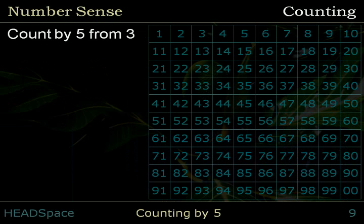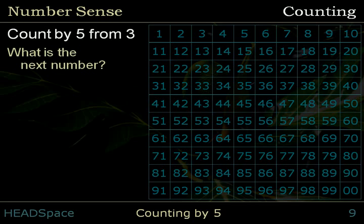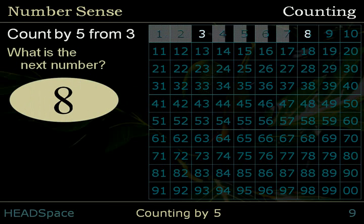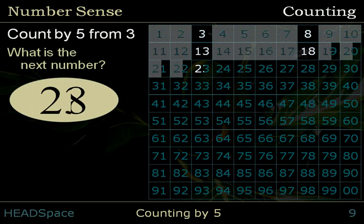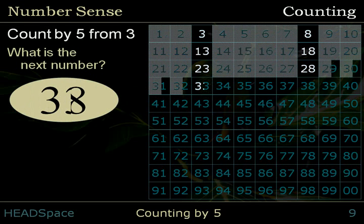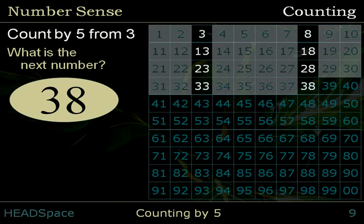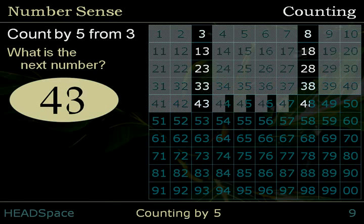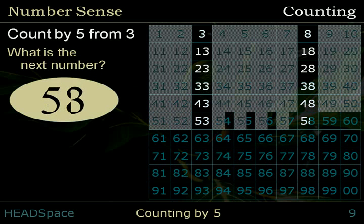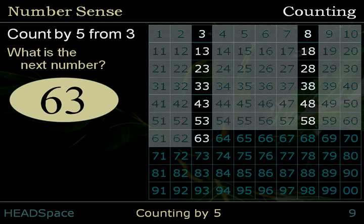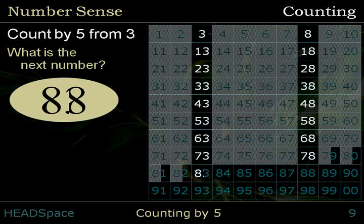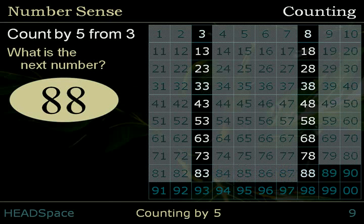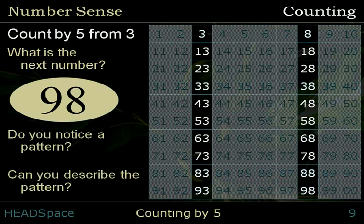Count by 5 from 3. What is the next number? 3, 8, 13, 18, 23, 28, 33, 38, 43, 48, 53, 58, 63, 68, 73, 78, 83, 88, 93. Can you describe the pattern?